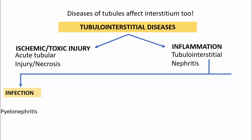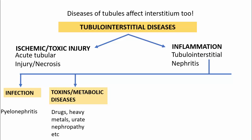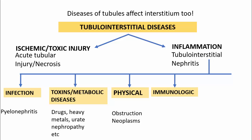The infection-related ones are mainly referred to as pyelonephritis, which we will discuss in detail in the next parts. Apart from infection, toxins or metabolic diseases can also result in tubulo-interstitial nephritis — for example, drugs, heavy metals, and urate nephropathy. Physical agents such as obstruction or neoplasm can also cause it. Sometimes immunologic causes can be there, like sarcoidosis or renal transplant rejections, resulting in evidence of tubulo-interstitial nephritis. When the cause is unknown, it is classified as idiopathic or under miscellaneous causes.